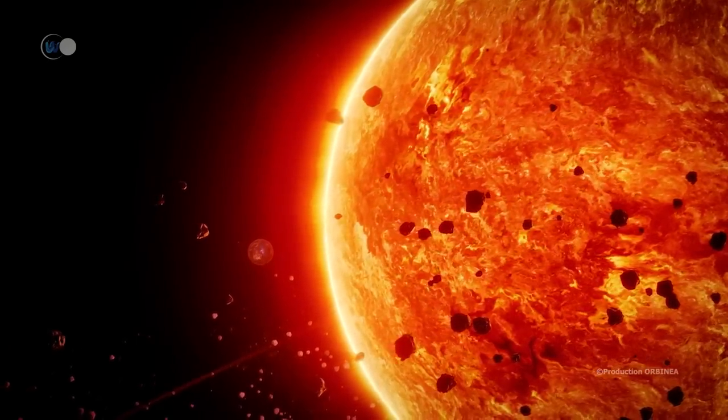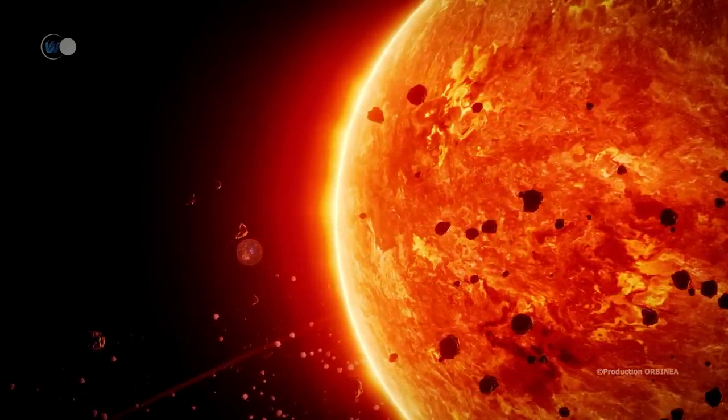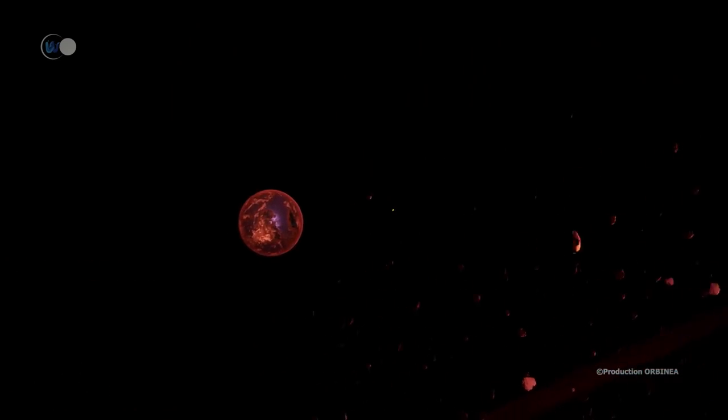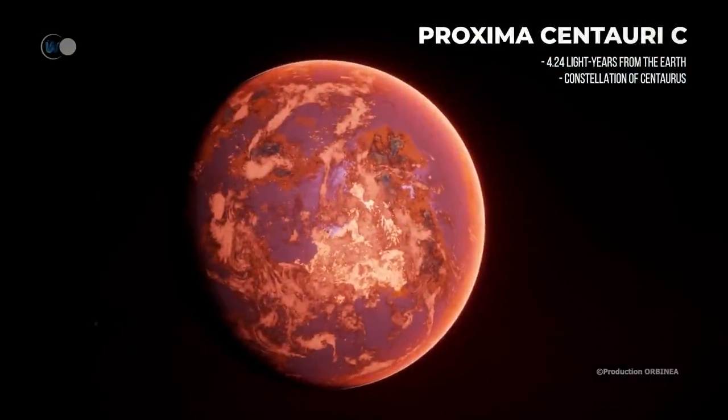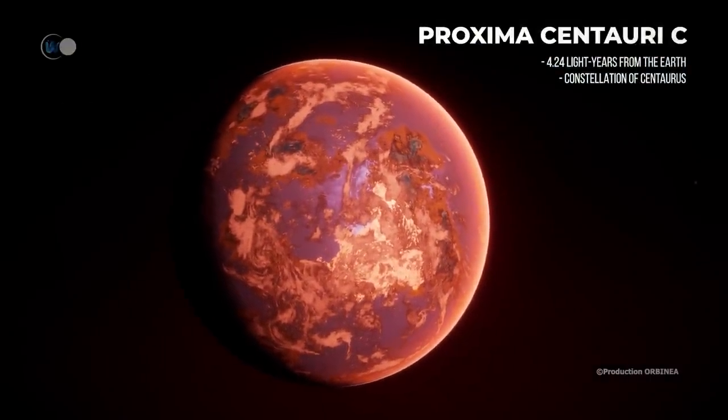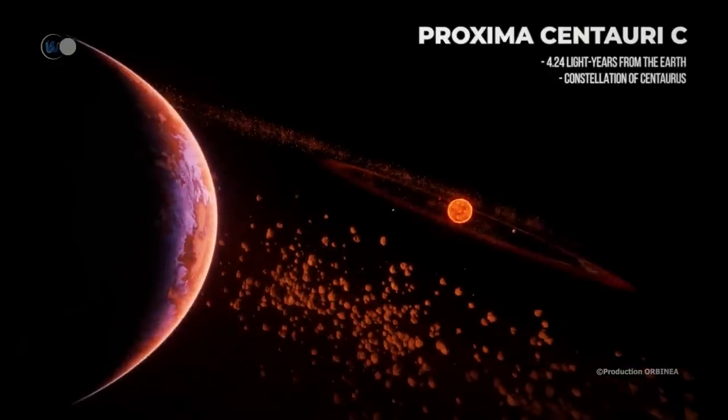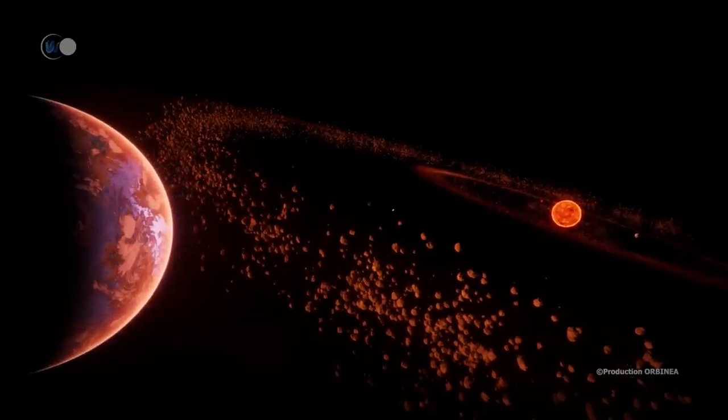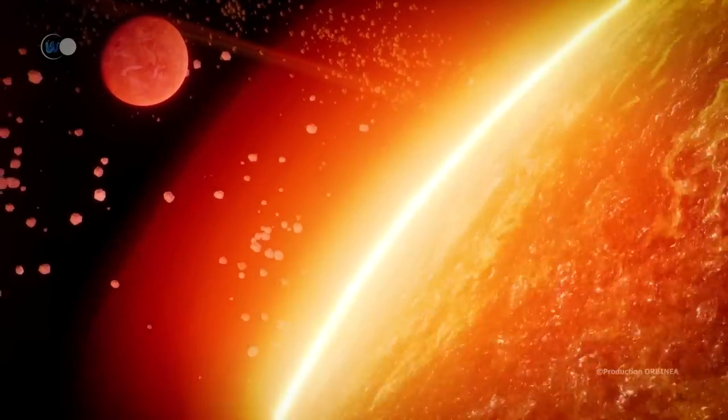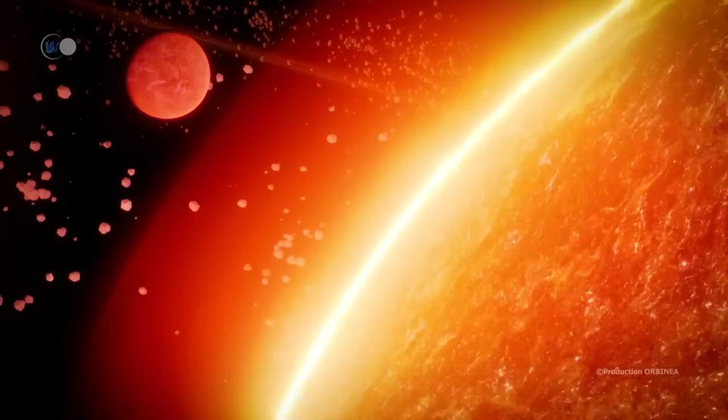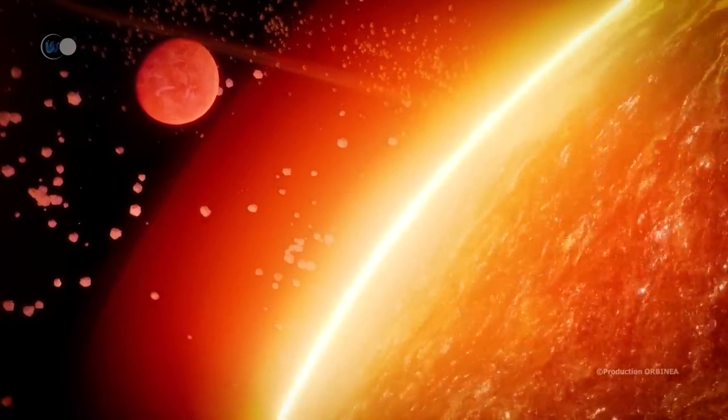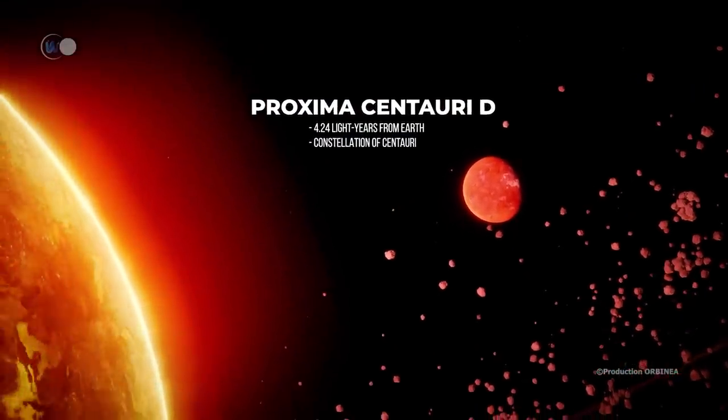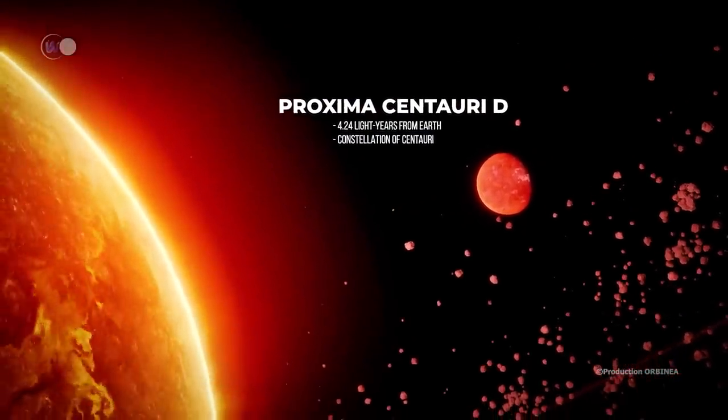The second planet that orbits Proxima Centauri is a cold super-Earth of the mini-Neptune type. This is Proxima Centauri c. With a mass of 5.8 times that of the Earth, it is located at about 1.5 AU from its star. Its orbital period is 1900 days, or a little more than five Earth years. Finally, an exoplanet, whose mass is a quarter of that of the Earth, was detected in 2022. It is Proxima Centauri d, an exoplanet distant from its host by only 4 million kilometers or 2.5 million miles.